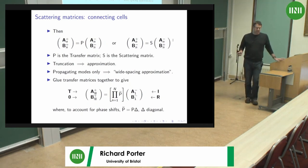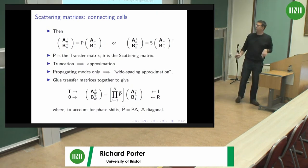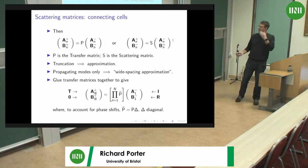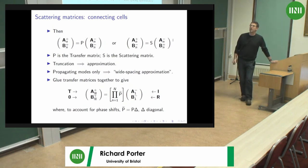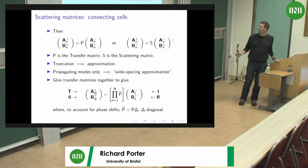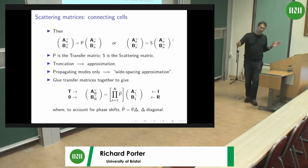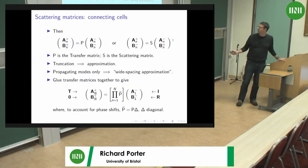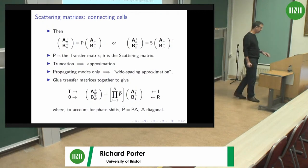Once you've got a matrix characterising what comes in from the right and from the left, you can glue these matrices together, inserting a phase matrix for each step to account for the coordinate transform. You end up with a product of transfer matrices connecting the left-hand edge to the right-hand edge of your scattering region. At those edges you associate incident, reflected, and transmitted waves. So you can work out R and T in terms of quantities known from the single cell.